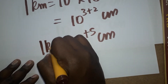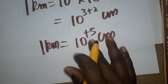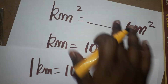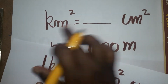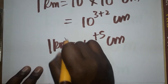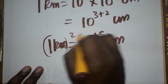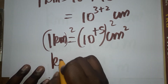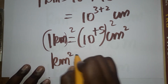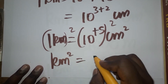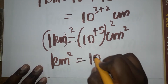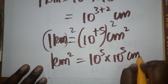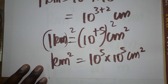Now our question is: 1 kilometer square is equal to how many centimeter square? We just square this equation. So 1 kilometer square is equal to 10 power 5 into 10 power 5 centimeter square.